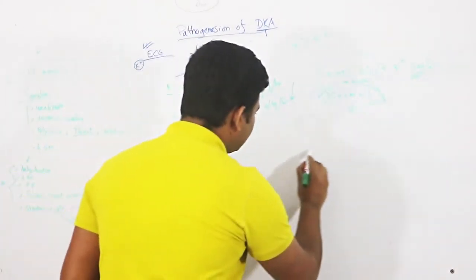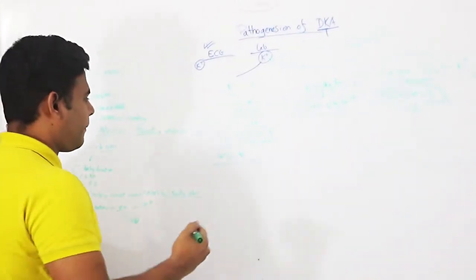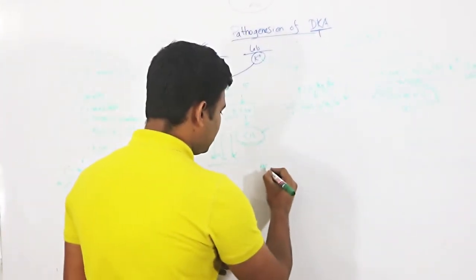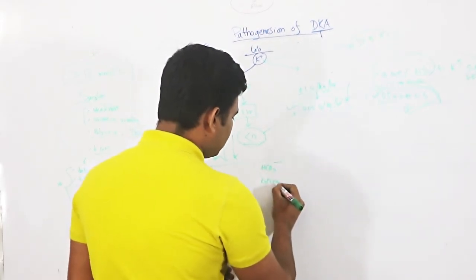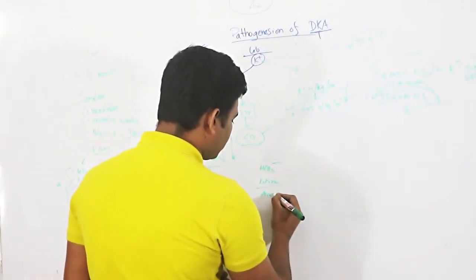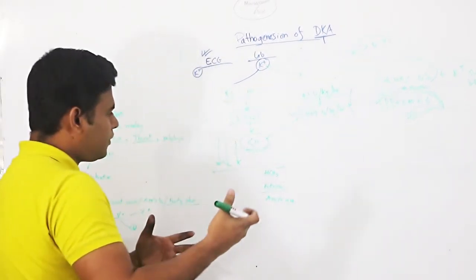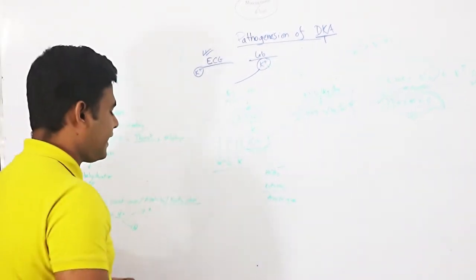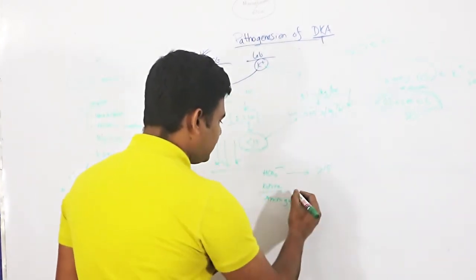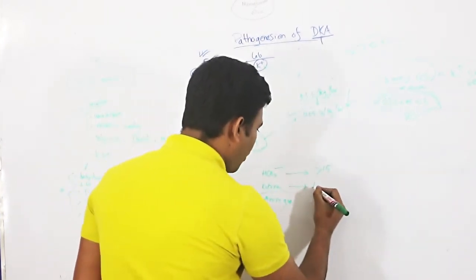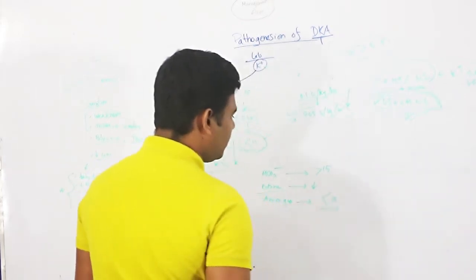We are routinely checking the patient to see if they are improving. We check the bicarbonate, the ketone bodies, and the anion gap. We have seen the bicarbonate is more than 15, the ketone body is less, and the anion gap is less than 12.